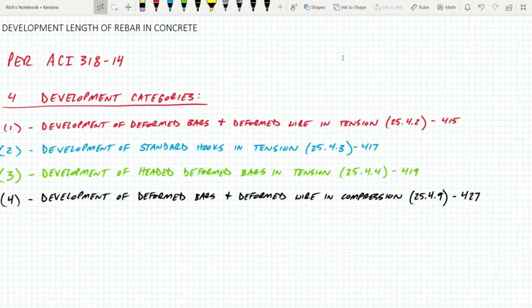We're going to be going over four development categories. Number one, the development of deformed bars and deformed wire in tension. That's in section 25.4.2, which corresponds to page 415 of the code. Second is development of standard hooks in tension, section 25.4.3, page 417. Third, development of headed deformed bars in tension, section 25.4.4, page 419. And lastly, development of deformed bars and deformed wire in compression, section 25.4.9, which corresponds to page 427.